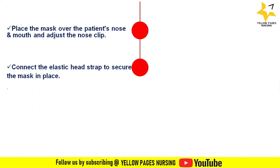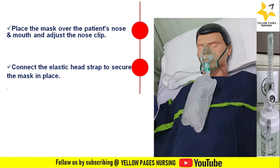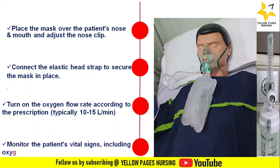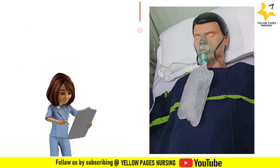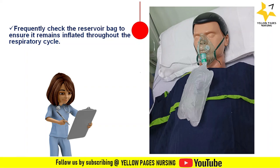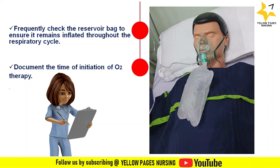Connect the elastic head strap to secure the mask in place. Turn on the oxygen flow rate according to the prescription, typically 10 to 15 liters per minute. Monitor the patient's vital signs including oxygen saturation frequently. Check the reservoir bag to ensure it remains inflated throughout the respiratory cycle. Document the time of initiation of oxygen therapy.